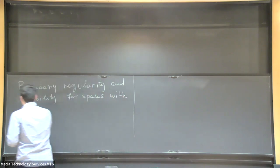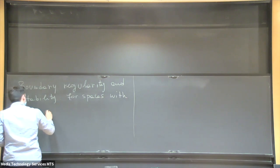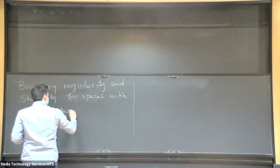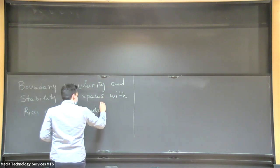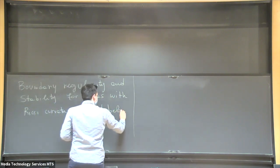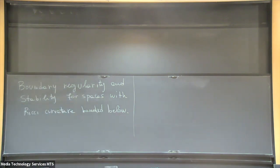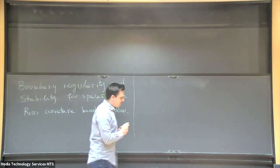Our speaker today is Elia Bueh, a newly minted member of the Institute, with a delay caused by visa problems. He will talk about boundary and stability for spaces with Ricci curvature bounded from below. Thank you, Camilo, for the introduction, and also thank you for inviting me.